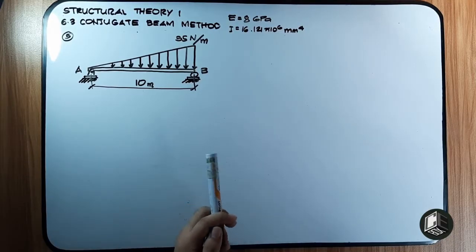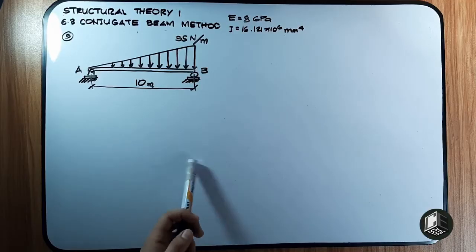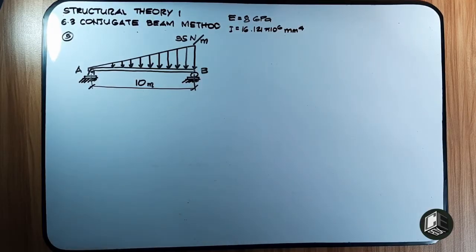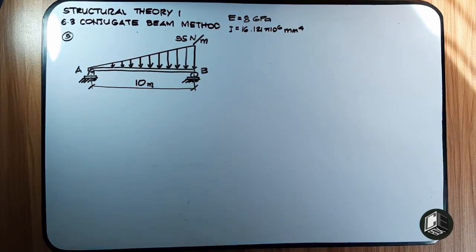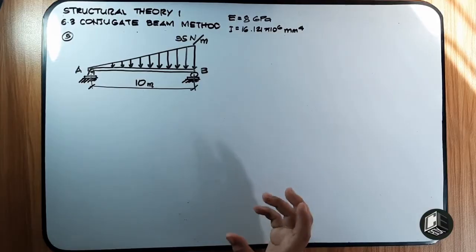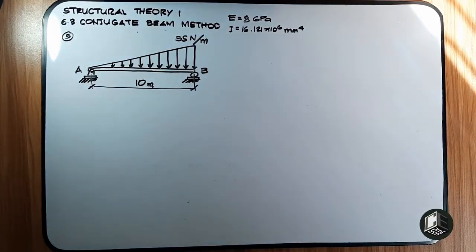The answers should still match. There may be a small discrepancy, but in general, the conjugate beam method, moment area theorem, and double integration method are all for determinate beams, so regardless of which method you use, the answer will still match. Take Example Number 1 in double integration and try it using conjugate beam or moment area — the answers will still be the same.